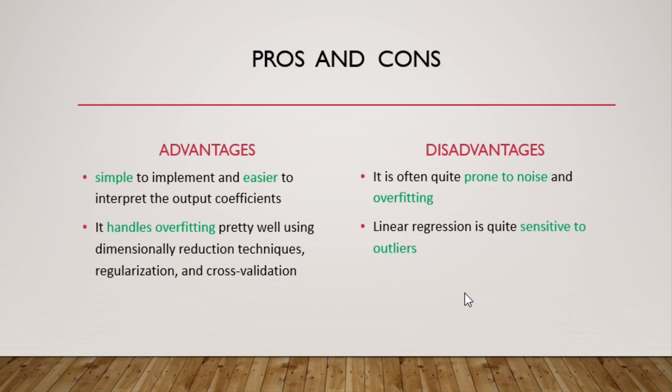So let's look at the pros and cons of linear regression. When it comes to its advantages, it is simple to implement and easier to interpret the output coefficients. And it handles overfitting pretty well using dimensionality reduction techniques, regularization and cross-validation. And when it comes to disadvantages, it is often quite prone to noise and overfitting, and it is quite sensitive to outliers.